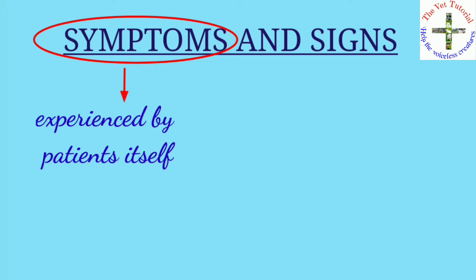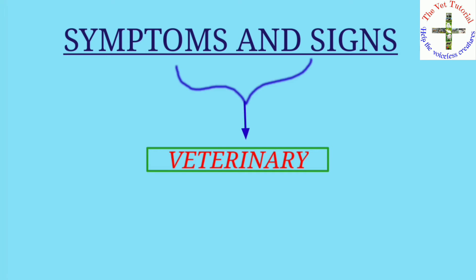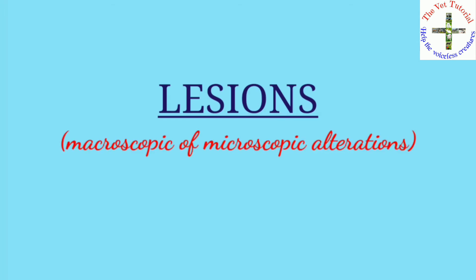Signs are observations made by a physician or doctor — for example, elevation in blood pressure. In the case of veterinarians, symptoms and signs are considered the same, as animals cannot tell what they are experiencing or what they are feeling.